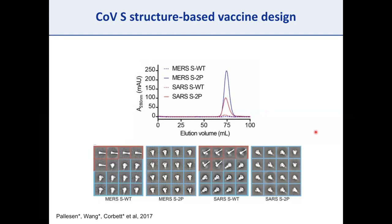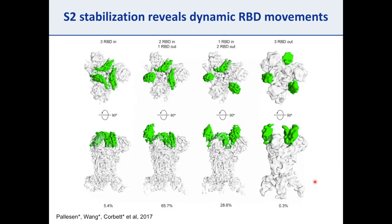By negative stain EM in collaboration with the Ward lab at Scripps, MERS-S wild-type showed some pre-fusion 2D class averages but also contaminating post-fusion trimers resembling a golf tee. MERS-S2P showed no contaminating post-fusion trimers, indicating the proline mutations had their intended stabilizing effect. The same pattern held for SARS: wild-type had contaminating post-fusion trimers, while SARS-S2P was entirely pre-fusion.